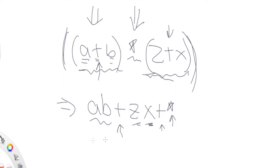Finally, we print out the multiplication because that's the final operation covering both parentheses groups. So the end result is `a b + z x + *`.